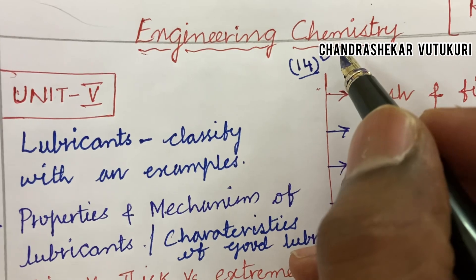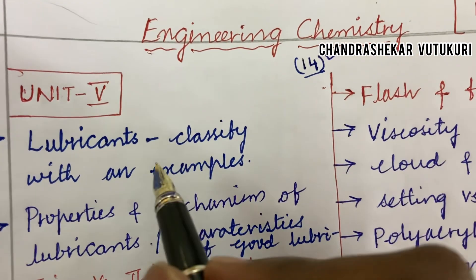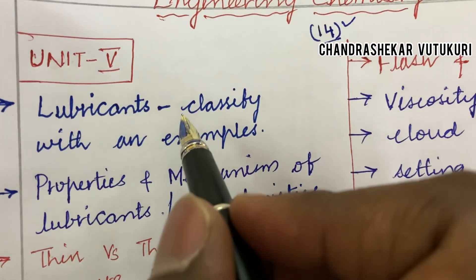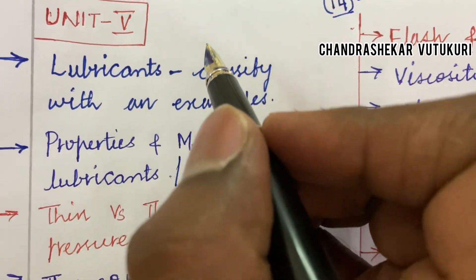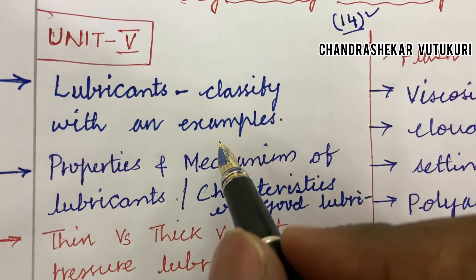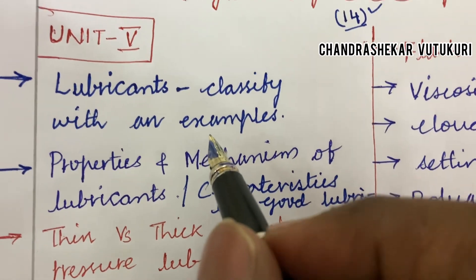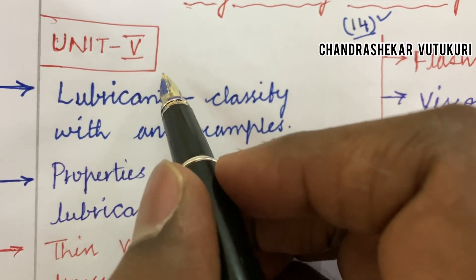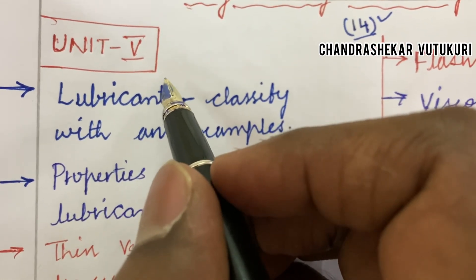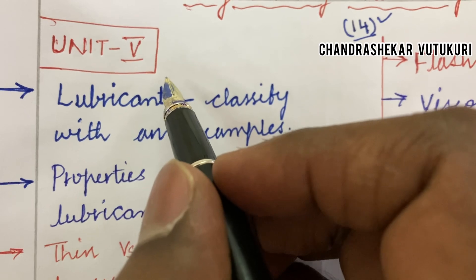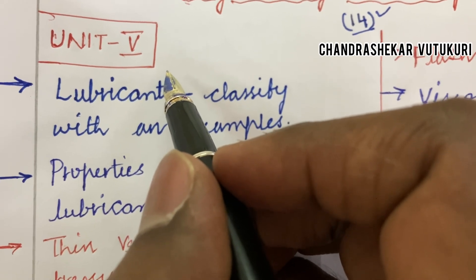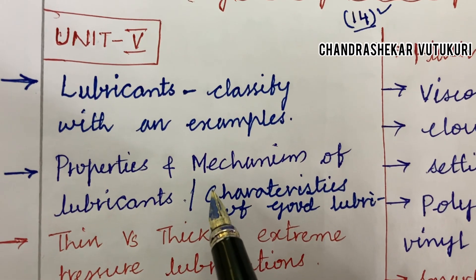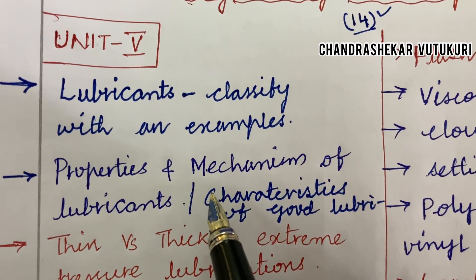In this video, I am going to highlight a few important questions for the course Engineering Chemistry for all branches of Engineering. The first unit I have taken into consideration is Unit 5, because you are taking Mid 2, so you are supposed to concentrate on all the parts which I am going to highlight.